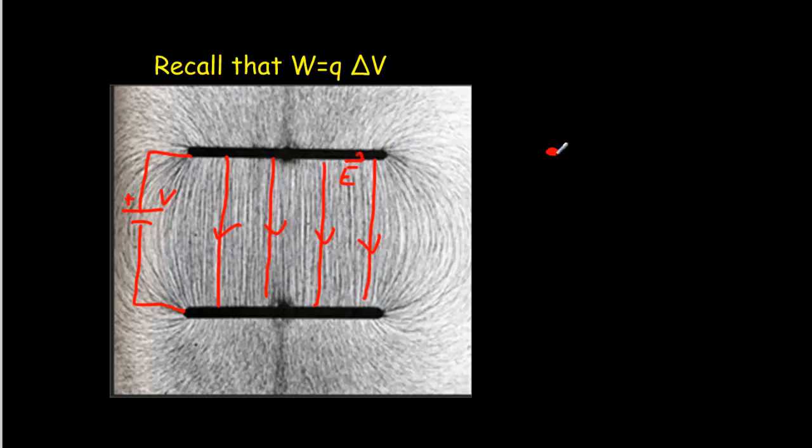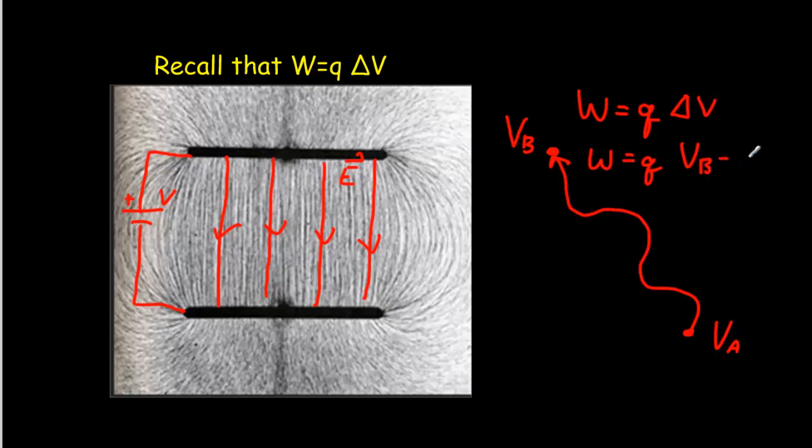And you'll recall that we were talking about the work done to move a charge from one potential to another. So we might have a charge here at point A that has a potential VA, and we might do some work and move it to point B here where the potential is VB. And we said that the work done to move from point A to point B would be equal to the size of the charge times the voltage difference between A and B. It would be equal to Q times VB, in this case the final potential, minus the initial potential, which was A.